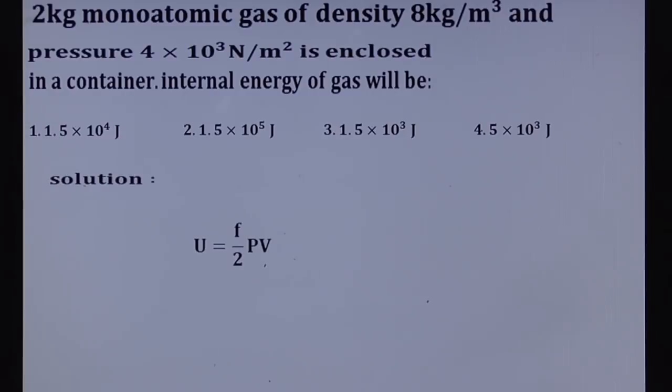So here, for monoatomic gas, given that the gas type is monoatomic gas, F value should be equal to 3. So what is pressure? Yes, directly given here, the pressure of the gas is 4 into 10 cube newton per meter square. So in place of P, you can substitute 4 into 10 cube.